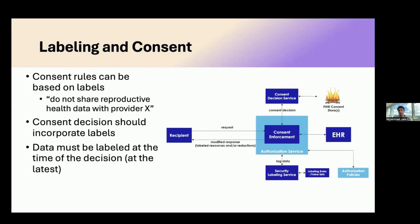I wanted to quickly touch on how consent enforcement overlaps with security labeling. As covered in the earlier talk, consent rules can depend on security labels, and this is a very powerful way for patients to articulate their privacy expectations. Instead of specifying individual encounters or data items by identifiers or clinical codes, patients can express something close to natural language — like 'I don't want to share any reproductive data.' This corresponds to advanced categories in the PCF maturity model. At enforcement time, the policy requires taking the data's labels into account and matching them against the consent policy.